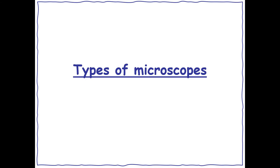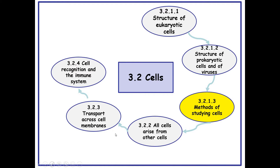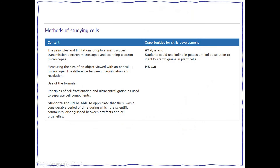Types of microscopes. This is section 3.2.1.3, methods of studying cells in the 3.2 cells topic. You need to know the principles and limitations of optical microscopes, transmission electron microscopes and scanning electron microscopes. You also need to be able to calculate the size of an object viewed with an optical microscope and understand the difference between magnification and resolution.